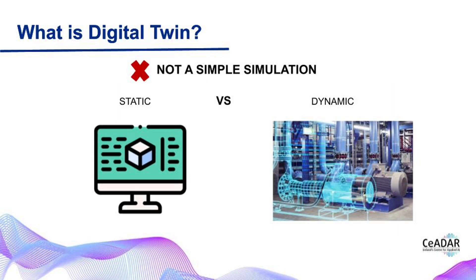But hold on, the digital twin is not simply a simulation of the real world. They are detailed, information-rich models of the real world. Simulations can be more generalized and abstract, while digital twins are designed to closely mimic the behavior of a specific physical system. And if we compare simulations to digital twins, we can say that simulations are static, while digital twins are dynamic.